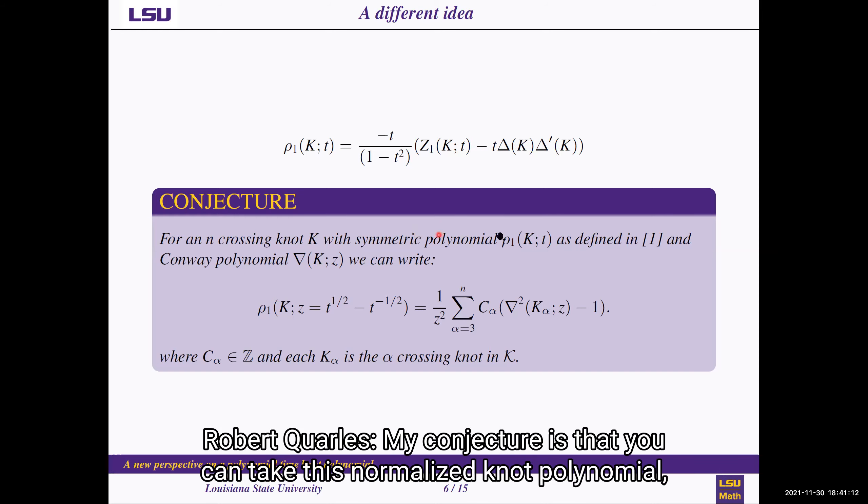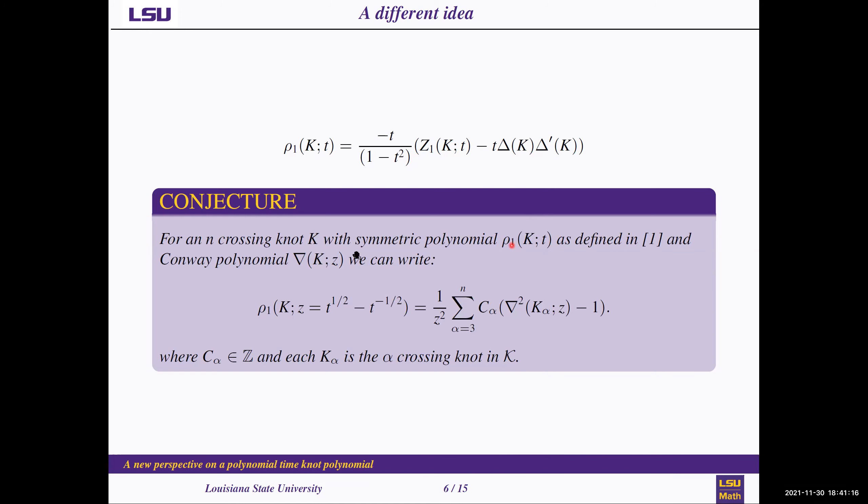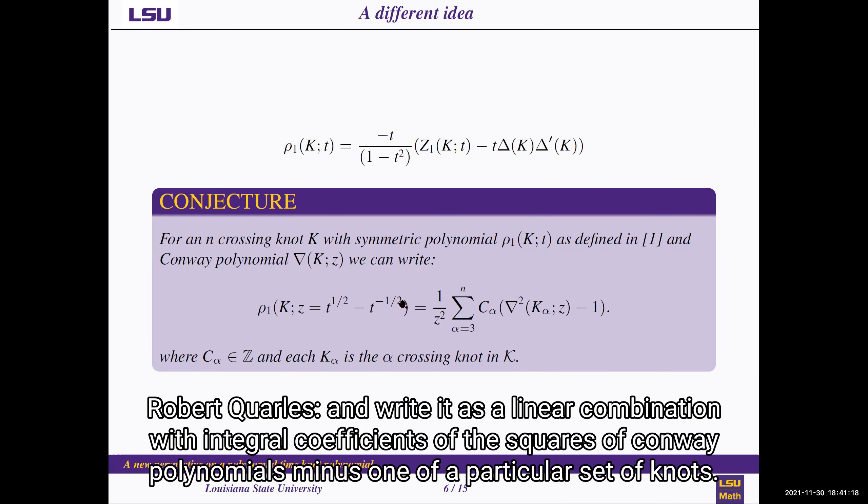And my conjecture is that you can take this normalized knot polynomial and write it as a linear combination with integral coefficients of the squares of Conway polynomials minus one of a particular set of knots.